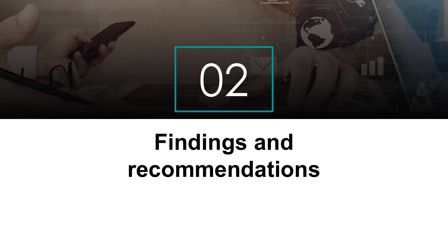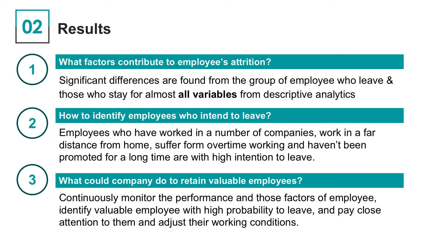Now we will introduce our findings and give some recommendations based on our analysis. We found almost all variables are correlated with attrition from descriptive analysis. However, from further exploring using machine learning algorithms, we found certain factors contribute more. For example, previous working experience, overtime working, and monthly income are the top three features, and we could use them to predict future attrition. This suggests that for employees with good performance, the company may need to pay close attention to these identified features to identify employees with a high probability to leave and then take measures in advance.